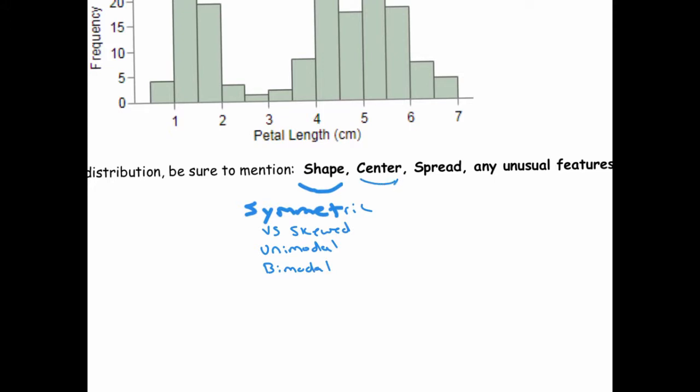When we talk about the center, we'll want to report the median or the mean. You'll mention the median when your data is skewed, and you'll use the mean if your data is symmetric. Sometimes you can't really tell exactly what these things are, so you just do the best you can to describe them.